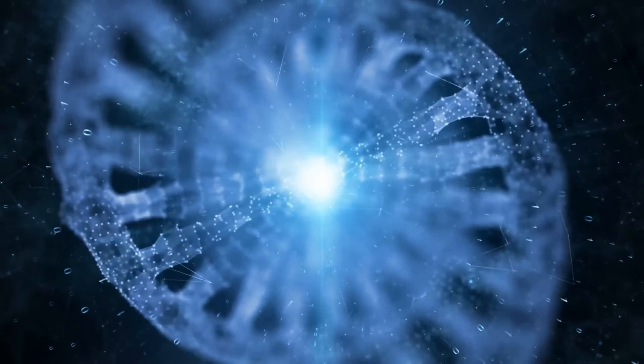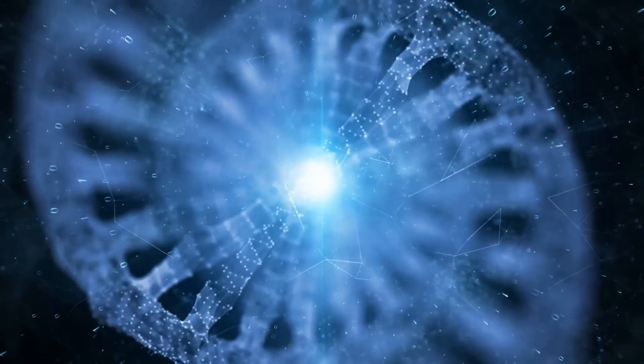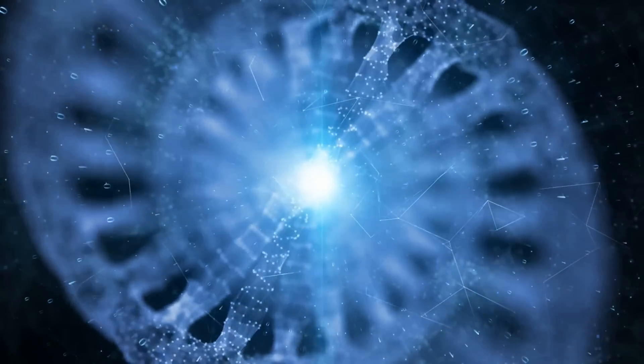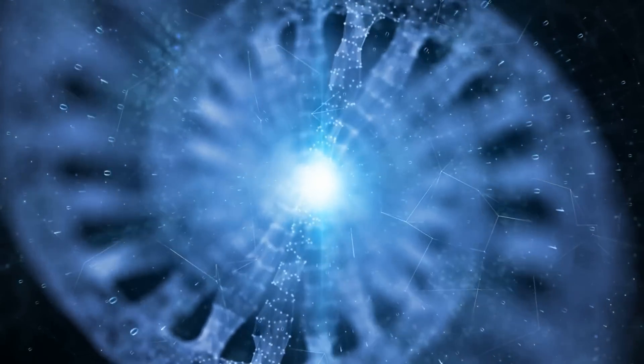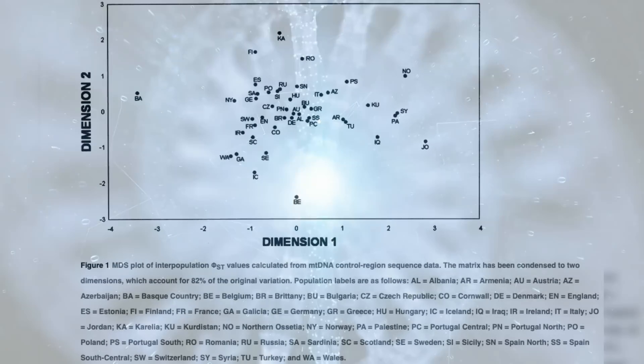Earlier efforts to define genetic structure in the Irish population mainly used uniparental markers. Y-chromosome and mitochondrial haplotypes, common in Ireland, show genetic continuity with those found in other Western European populations.